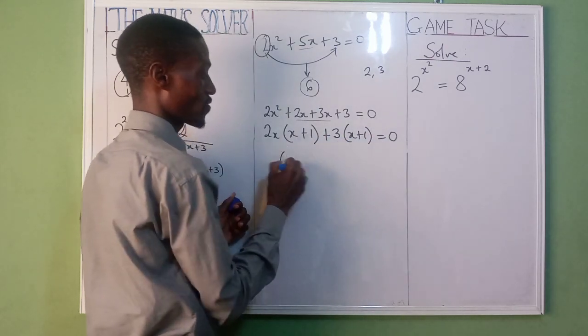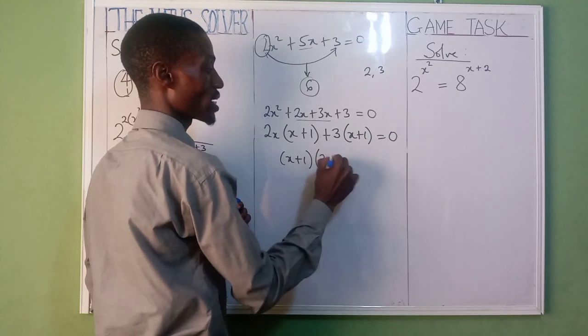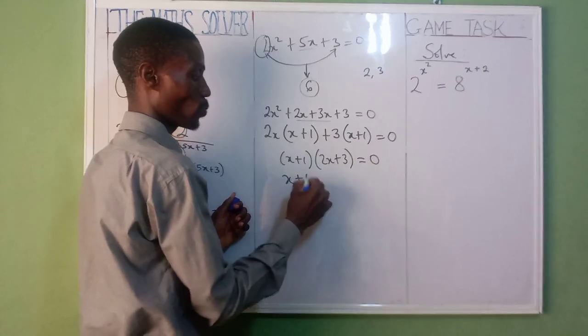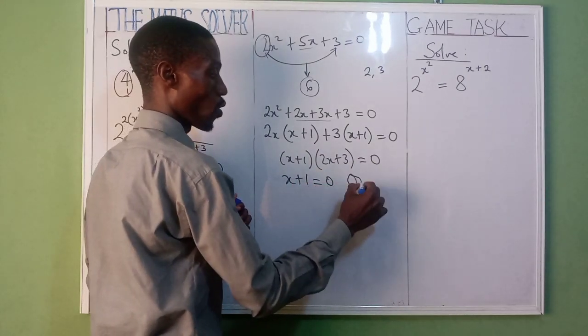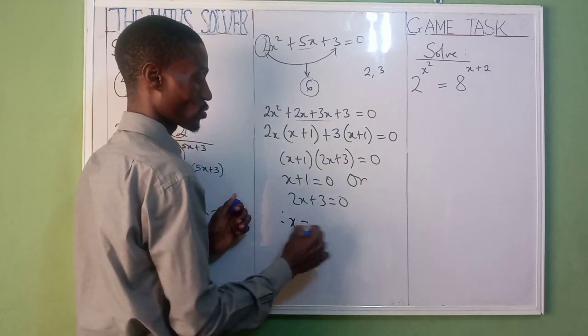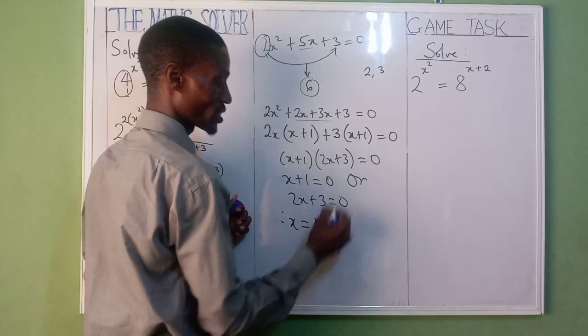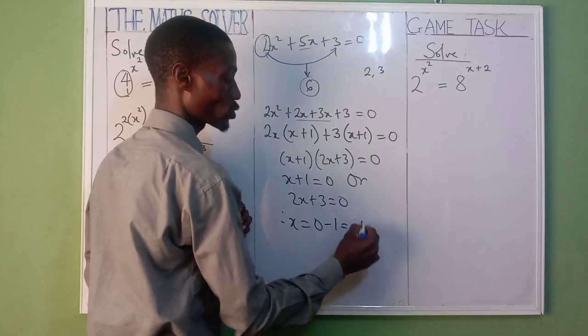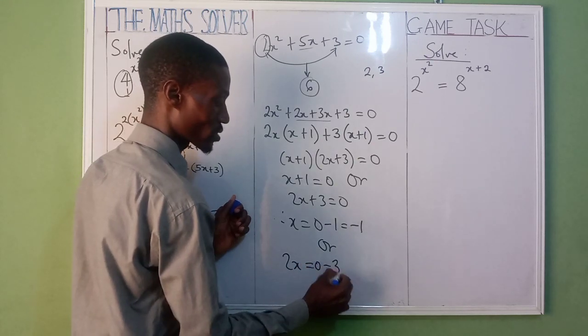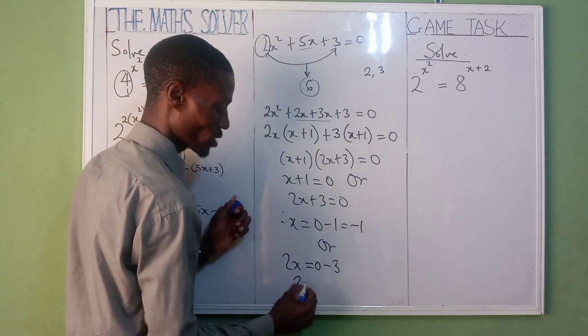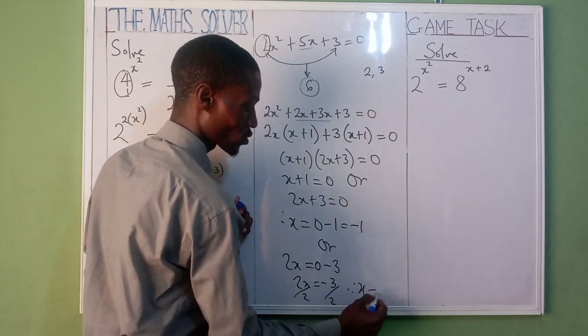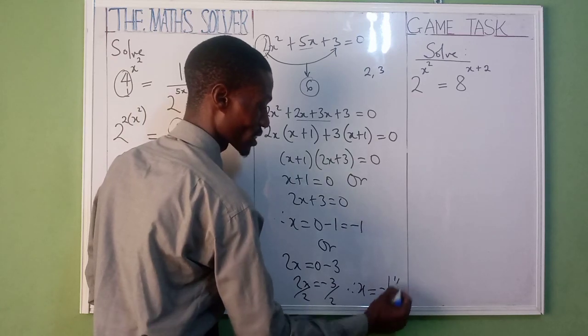As you can see in our brackets, we have x plus 1, 2x plus 3 equal to 0. Let's split it. We have x plus 1 equal to 0, or 2x plus 3 equal to 0. Therefore, x equal to minus 1, or 2x equal to minus 3 divided by 2. Therefore, your x equal to minus 1 or minus 3 over 2.